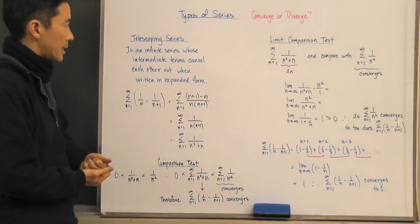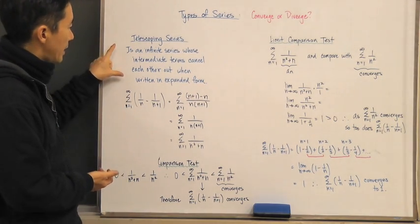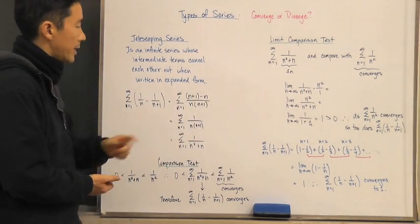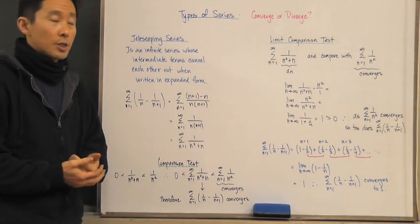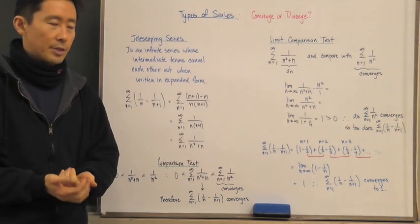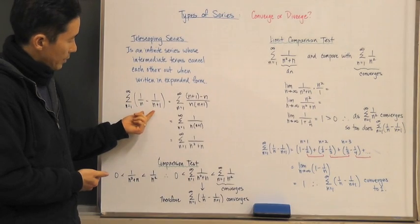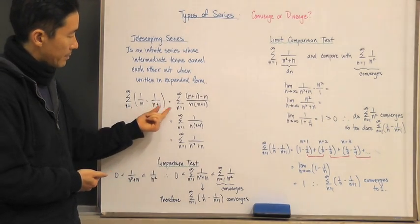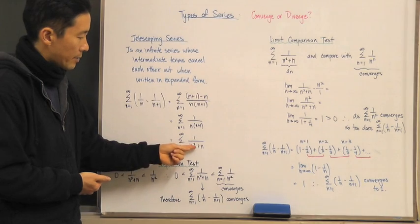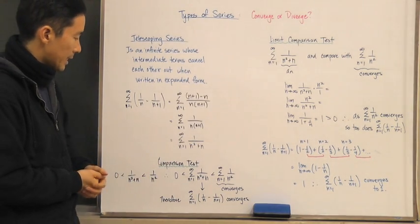Let's take a look at one of these telescoping series. Before examining this directly, let's see how we can show whether it converges or diverges using different methods. I'm going to simplify it so that it comes out to one over n squared plus n, and we can use a comparison test.